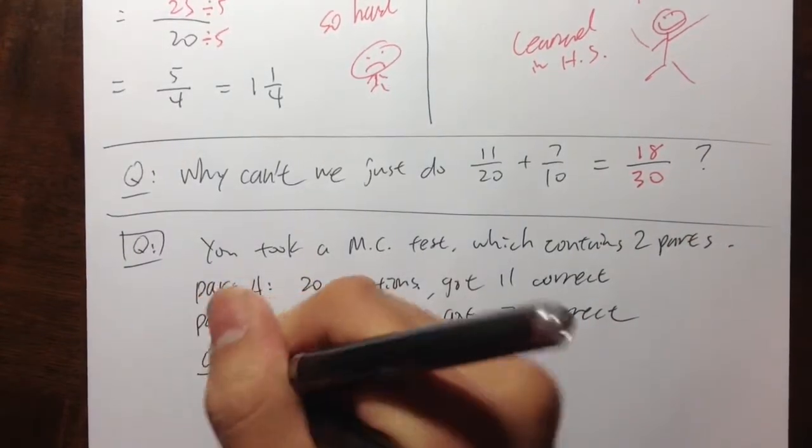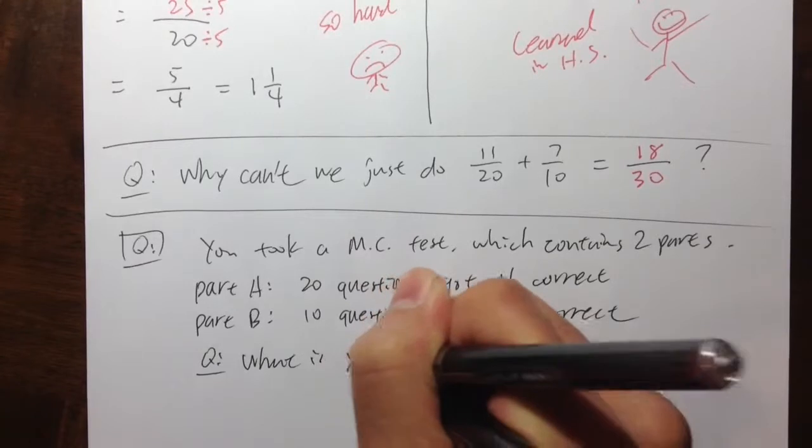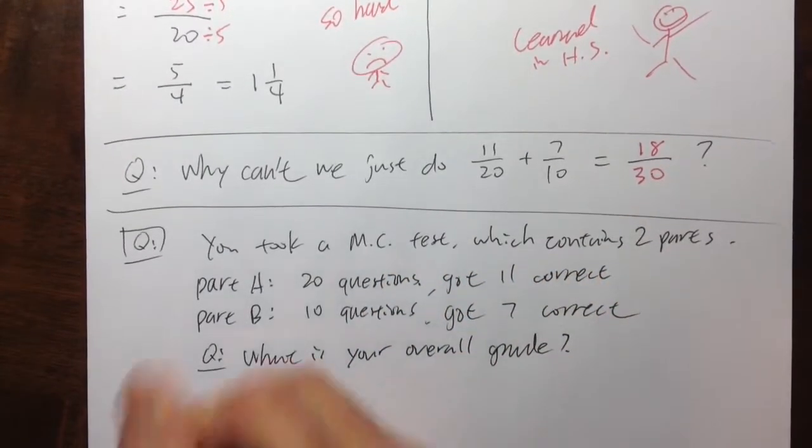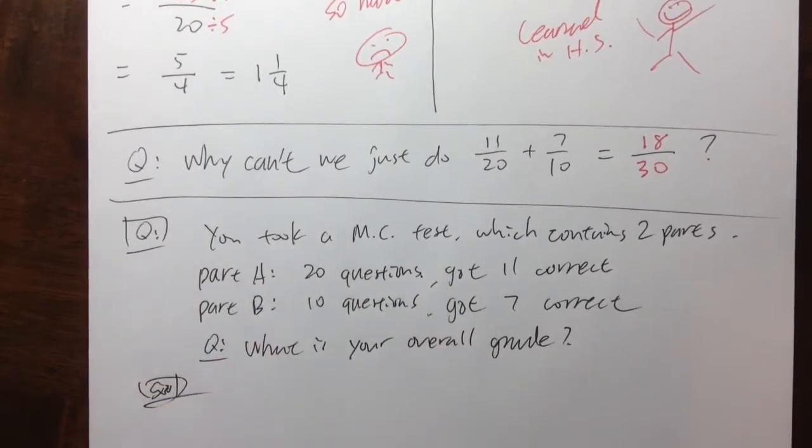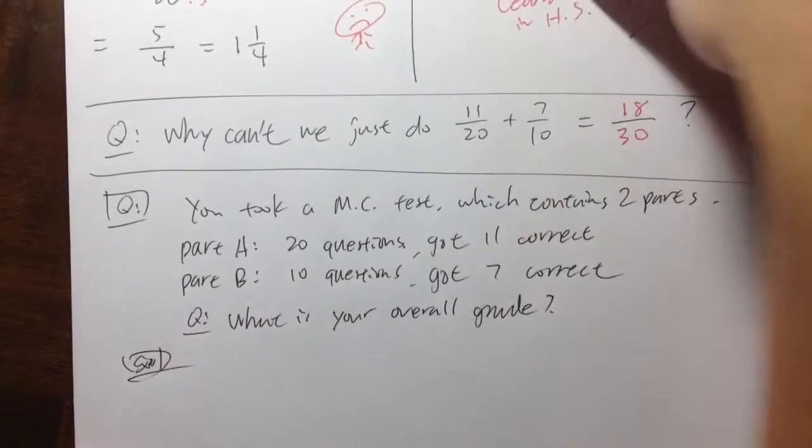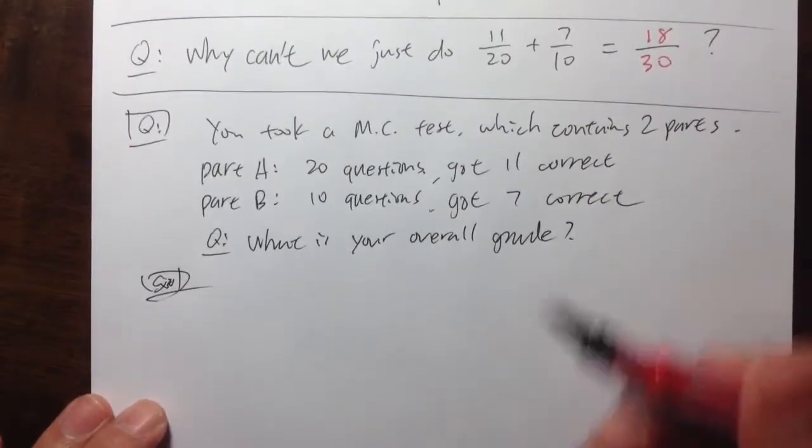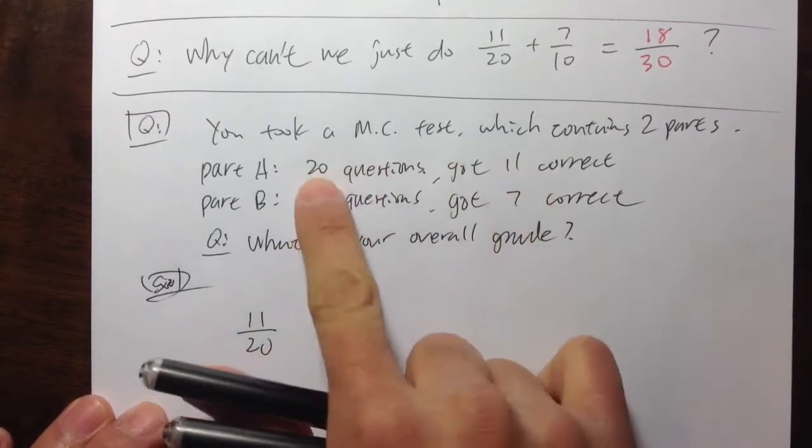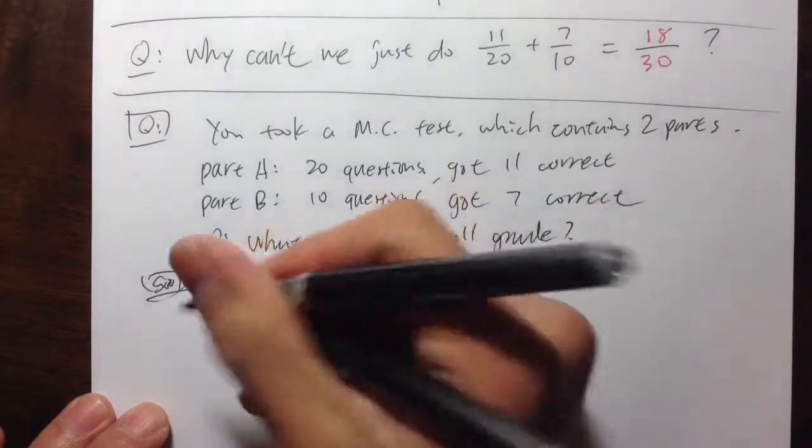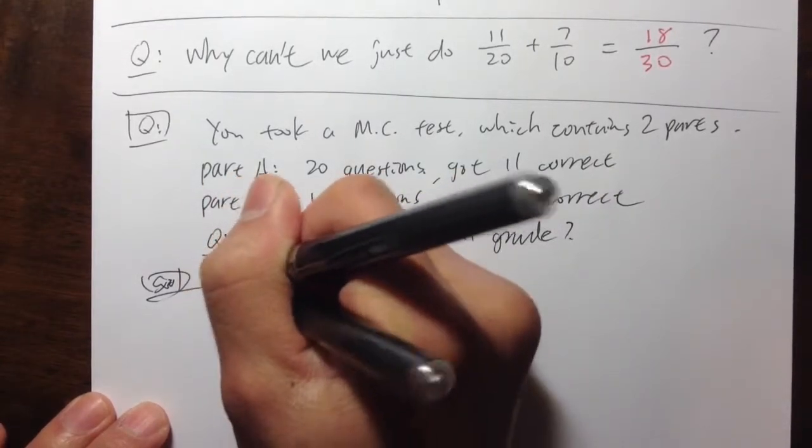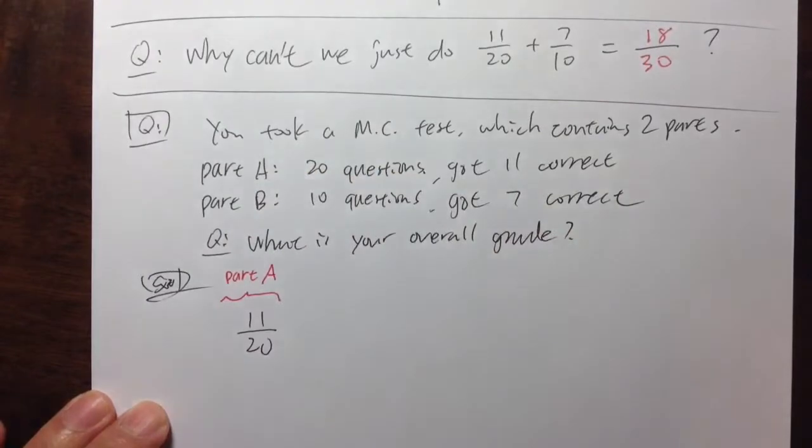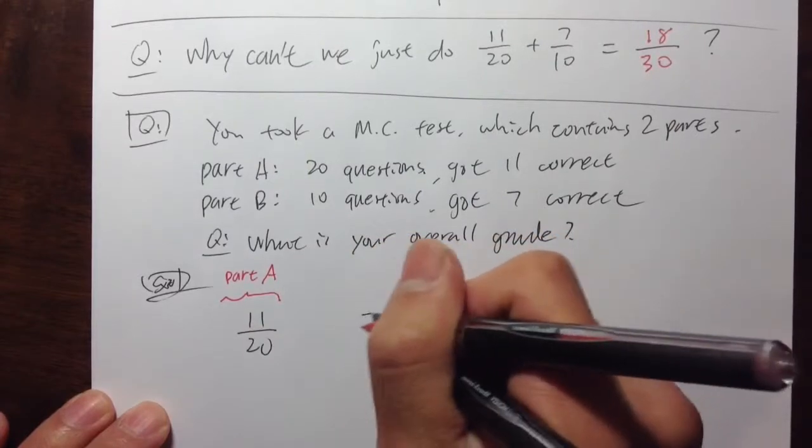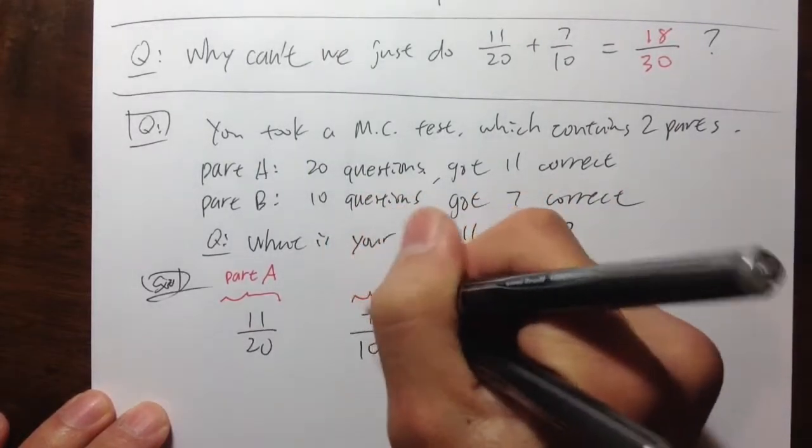And the question is, of course, what is your overall grade? Right, that's the question that everybody would like to figure out. So let's see how do we do this. So let's look at part A. I have 20 questions and I got 11 correct. And the grade for that will be 11 over 20. 11 correct out of 20 questions. So 11 over 20. So let me make a note right here. This is part A, the grade from part A, right? And for part B, I have 7 correct out of 10 questions. And that's exactly 7 over 10. So this is the grade from part B.